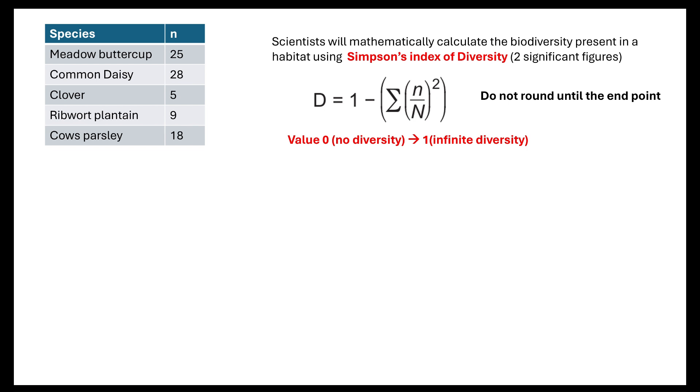One is infinite diversity, zero is no diversity. So you should get a number between zero and one. You will be expected to understand if I've got one sample which gives me a Simpson's index diversity number which is 0.4 and I have another one which is 0.8, which one has the higher diversity and why that would be important.